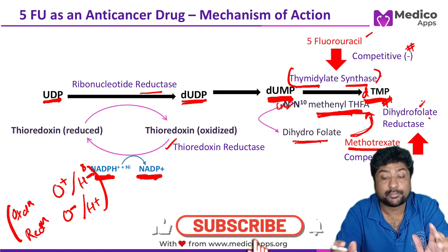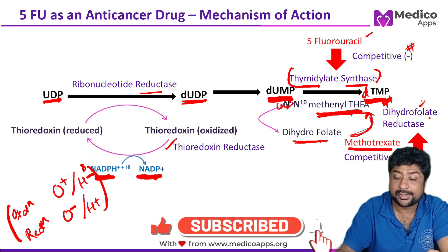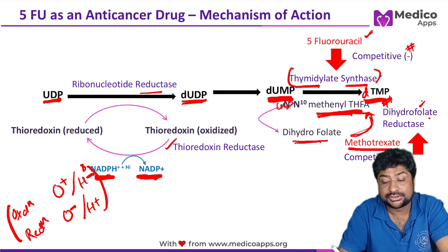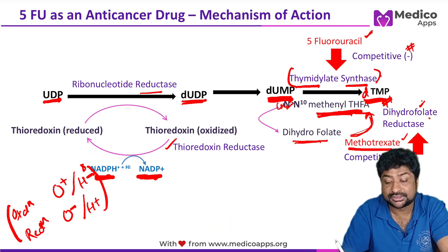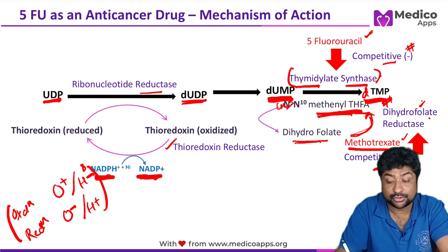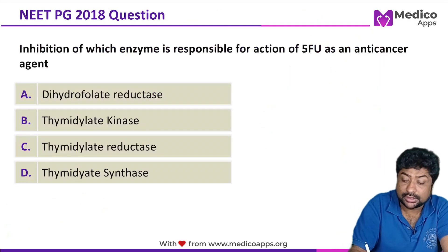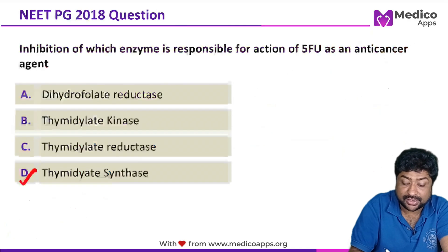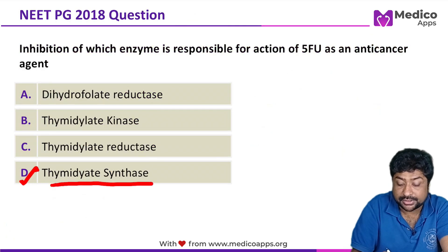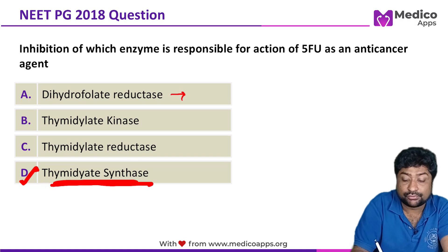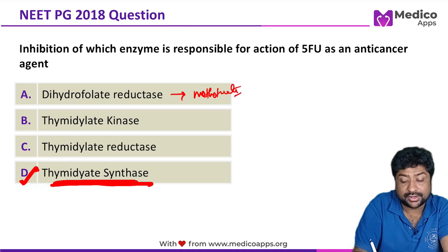There are multiple questions asked on these reactions — questions on the methyl trap, on 5-fluorouracil's mechanism of action, on methotrexate's mechanism of action, and on the type of inhibition involved. Remember: both are competitive inhibitions. The correct answer to this question is competitive inhibition of thymidylate synthase by 5-fluorouracil. Dihydrofolate reductase is competitively inhibited by methotrexate.